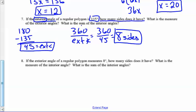It also asks here, what's the sum of the interior? Well, 8 sides times 180 minus 360 gives me 1080 degrees.